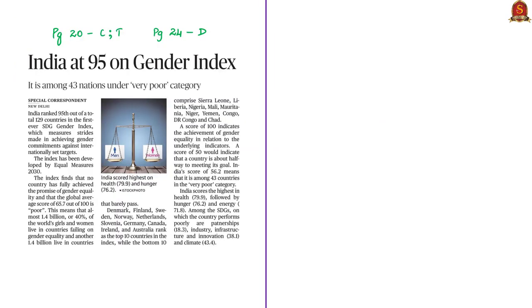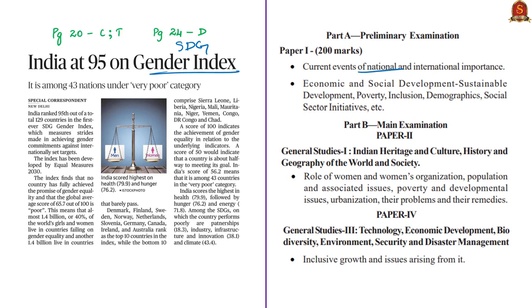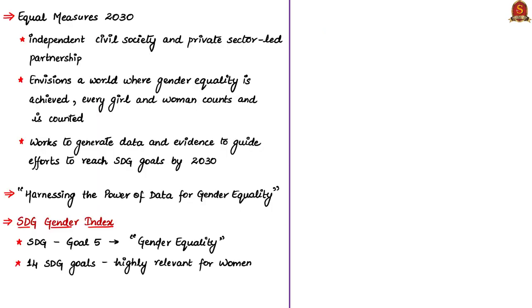The next article is about the ranking of India in the SDG Gender Index. This article is relevant in current events of national importance in prelim syllabus, and in mains under role of women in GS paper 1 — the problems, challenges and remedies — and GS paper 3 under inclusive growth. The SDG Gender Index is developed by a partnership named Equal Measures 2030, an independent civil society and private sector led partnership that works for a world where gender equality is achieved and every girl and woman counts and is counted.